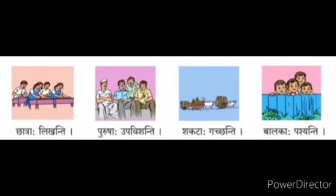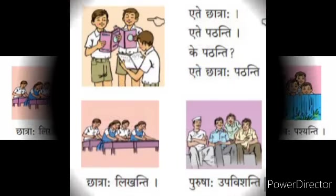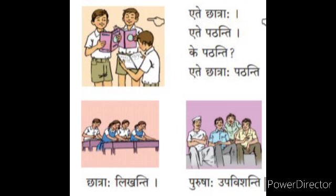Next, here we see four pictures with sentences. We make the first two pictures using etat and the last two using tat. First: chhatraha likhanti — students are writing. So we make the sentence: Ete chhatraha. Ete likhanti. Ke likhanti? Ete chhatraha likhanti.